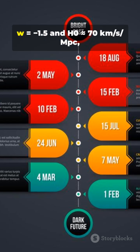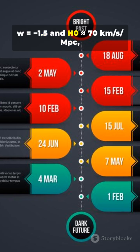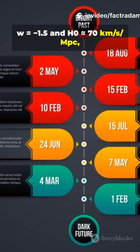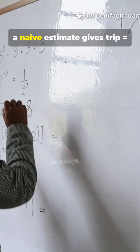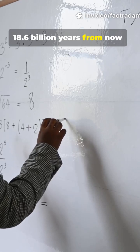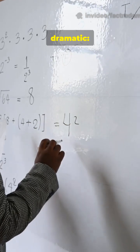Example, illustrative, with w = -1.5 and H0 = 70 km/s/Mpc, a naive estimate gives t_rip 18.6 billion years from now, but the final days are dramatic.